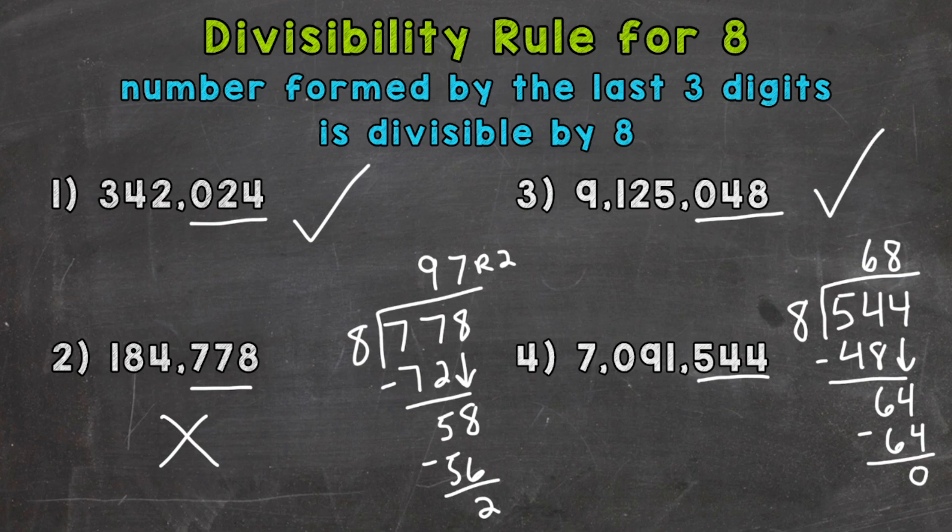And that shows that we do not have a remainder. So 544 is divisible by 8. Therefore, our original number of 7,091,544 is divisible by 8 as well.